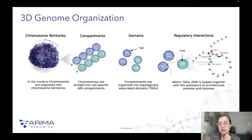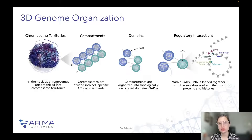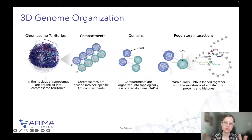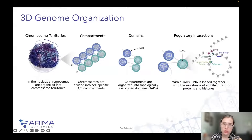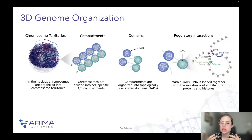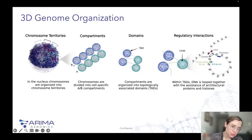So, 3D genome organization — what is it? I want to give you an overview of the hierarchy. The genome is not randomly positioned in the nucleus. At the highest level you see chromosomal territories — chromosomes don't really intermingle; they prefer to stay in their own little area. Zooming further into a chromosome, it's roughly partitioned into A and B compartments. A compartment describes areas of chromatin that are more transcriptionally active, enriched for active markers like acetylation. B compartment is enriched for repressive markers, and genes located there are not really expressed.